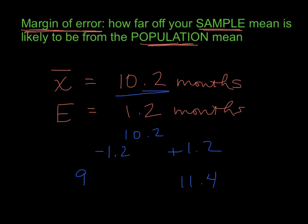So based on this sample mean and our margin of error, which we call just a big old giant E, the confidence interval for the population mean of all babies for when they take their first steps is somewhere between 9 months and 11.4 months.